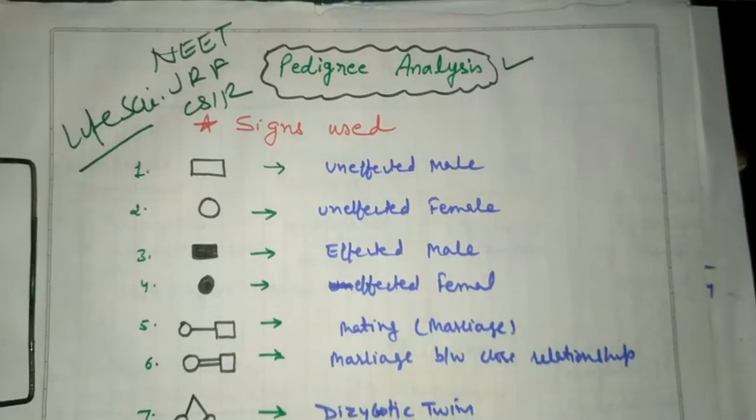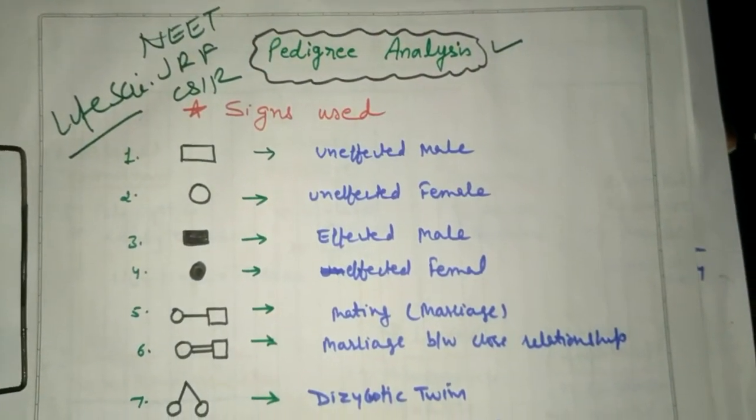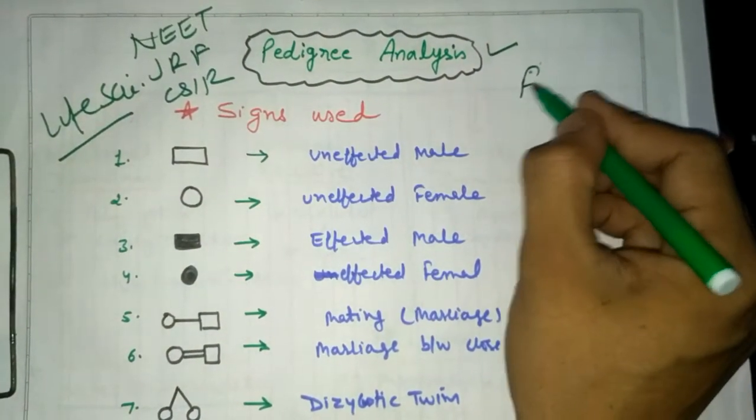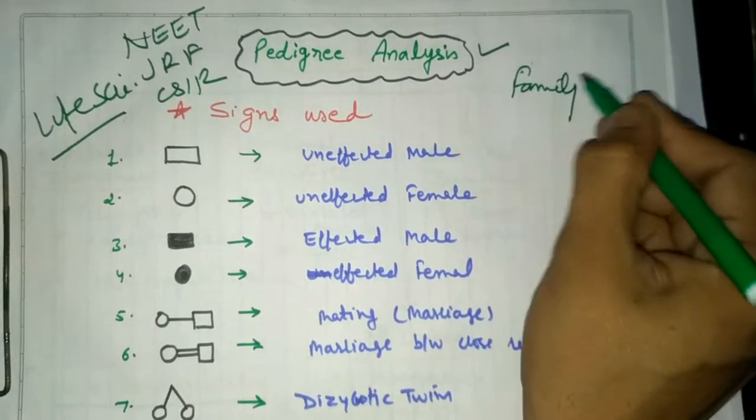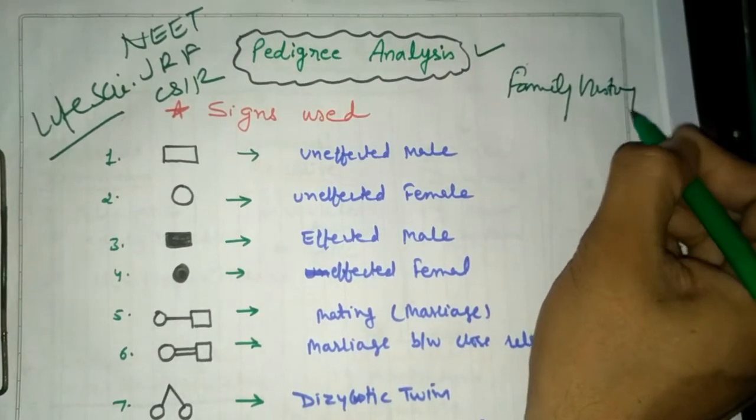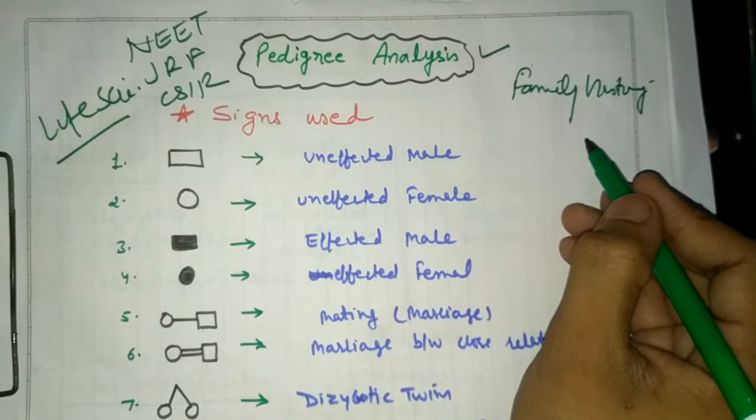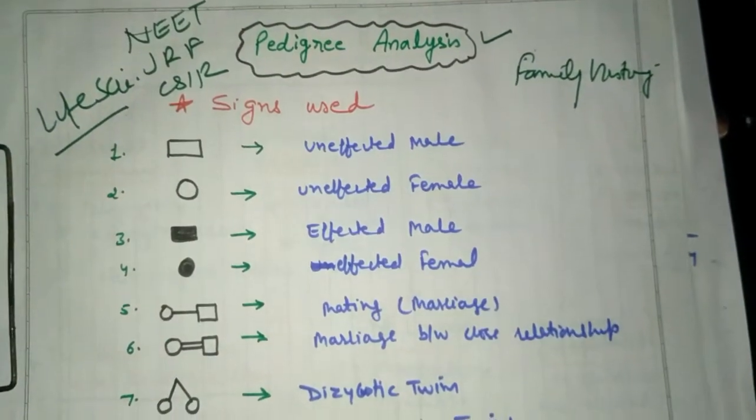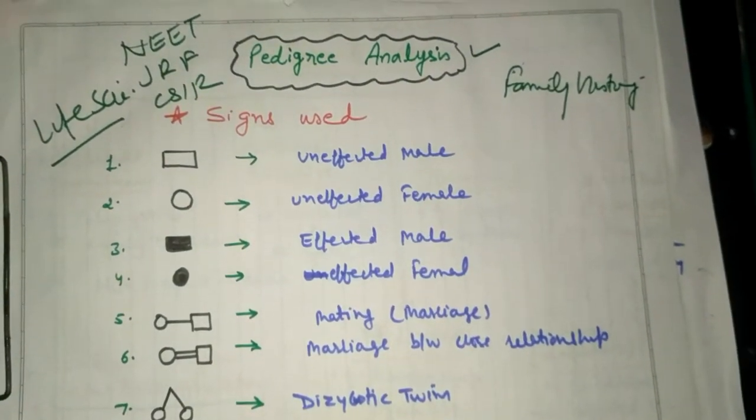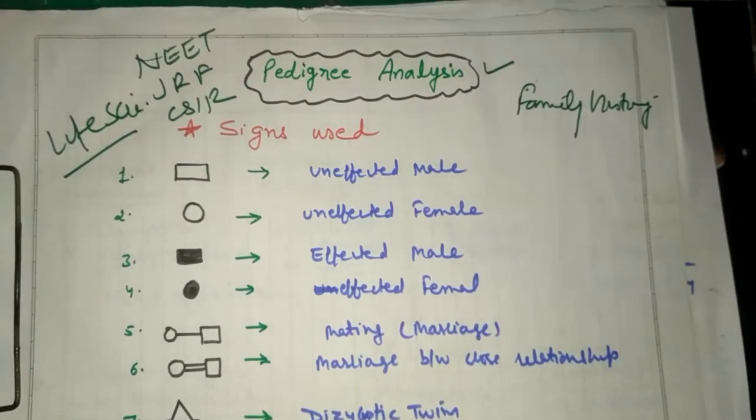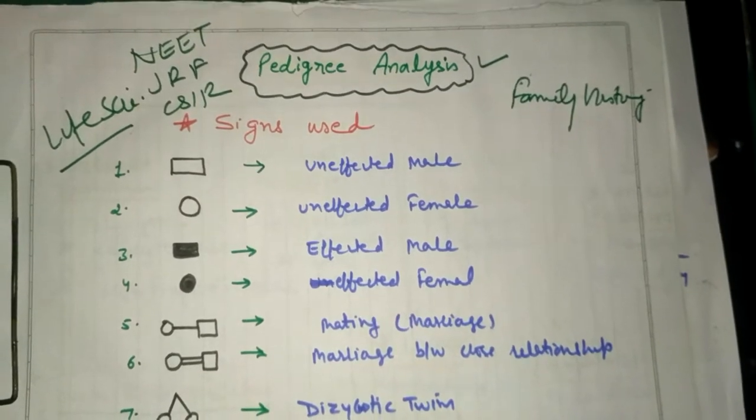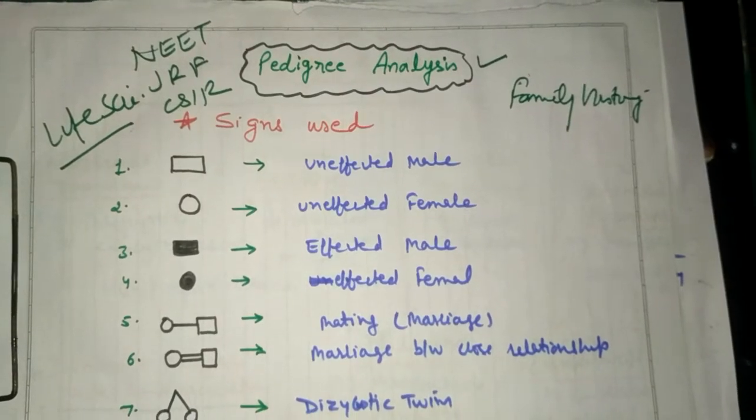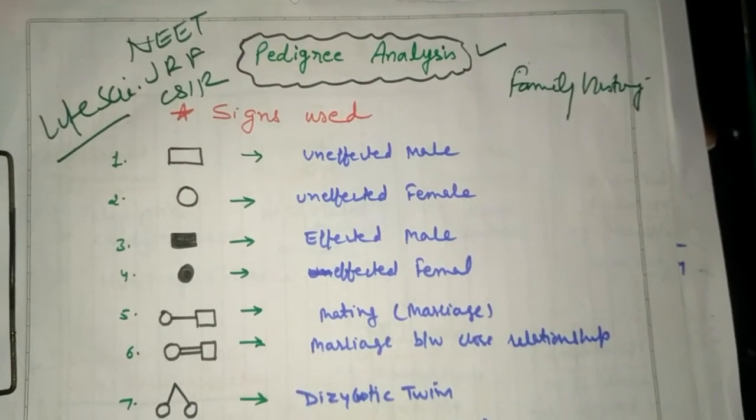What is pedigree analysis? Pedigree analysis is the study of family history and occurrence of a particular disease from parents to offspring. First, I will discuss the comprehensive method, then I will tell you the shortcut that will help you calculate the type of pedigree within two or three seconds.